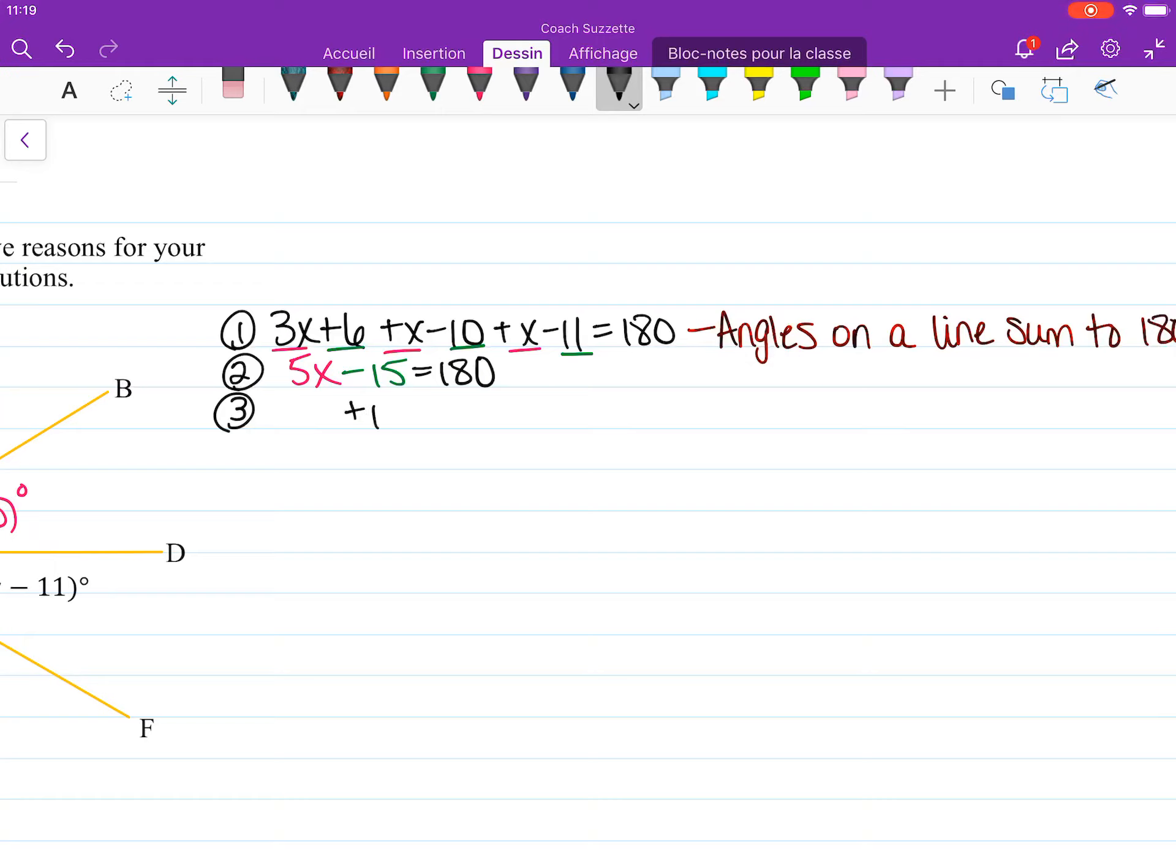Plus 15 on both sides. 5x is equal to 195. 195 divided by 5 is 39. We have x equals 39.